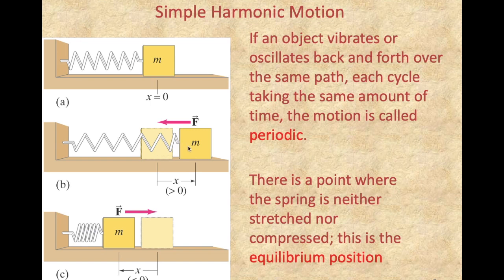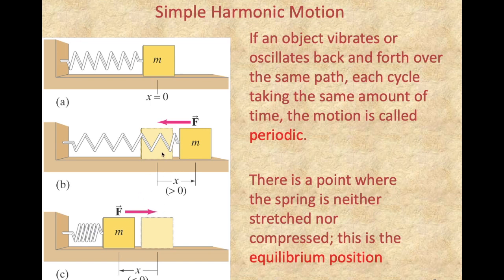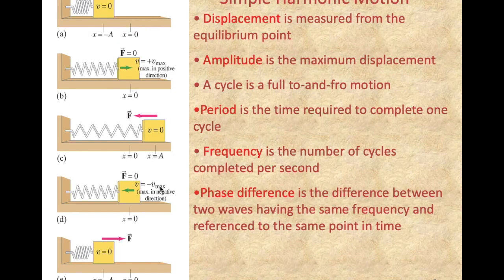In this picture, if the mass is pulled to the right of the equilibrium position, the displacement vector points towards the right, while the force of the spring pulls back towards the equilibrium position — to the left. These two vectors are in opposite directions. If the mass passes the equilibrium position and squeezes the spring to the left, the displacement vector points left and the force vector points right. The force vector always points towards the equilibrium position.